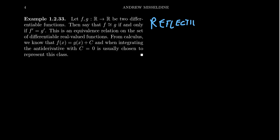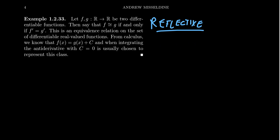Why is it reflexive? The reflexive property holds because F prime is going to equal F prime — if F is equal to itself, this implies they'll have the same derivative, which then implies that F is related to F. That's pretty easy.